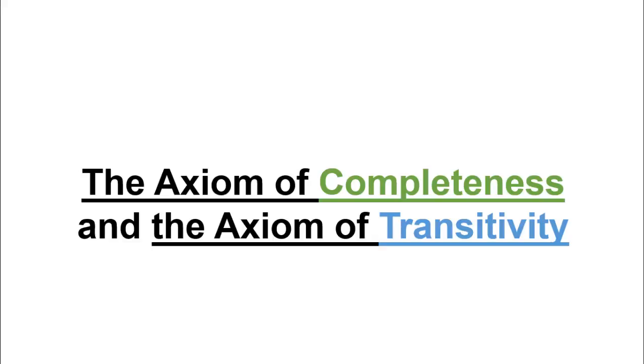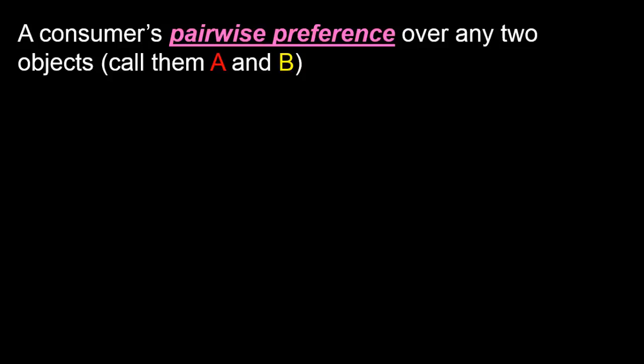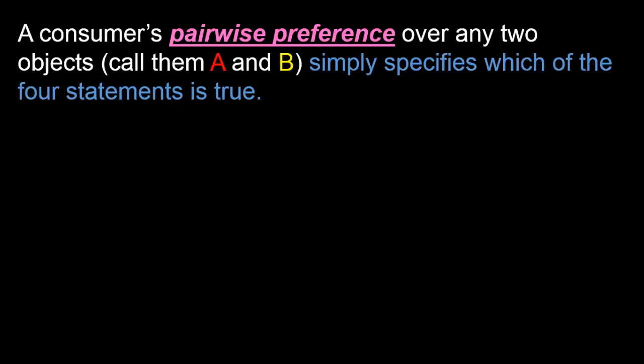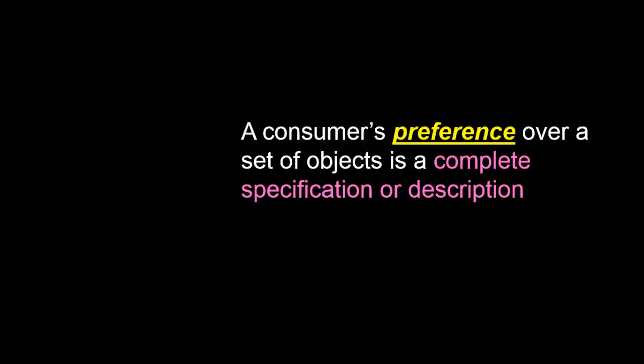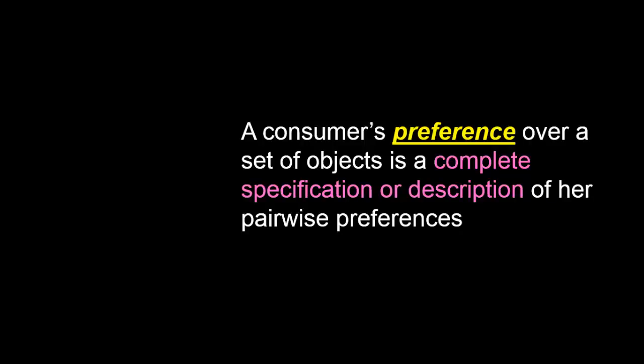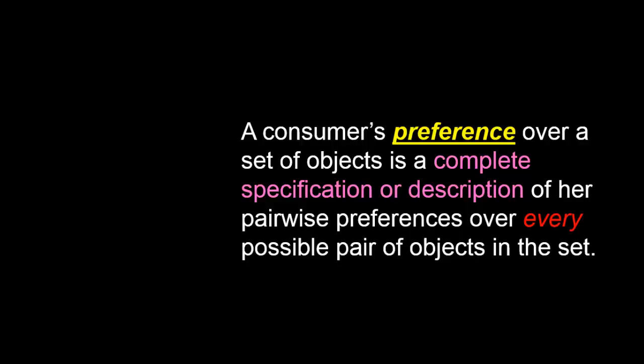The axiom of completeness and the axiom of transitivity. In the last video, we said that a consumer's pairwise preference over any pair of objects, called them A and B, is simply a specification of which of four statements is true. We then defined the consumer's preference over a set of objects to be a complete specification of pairwise preferences over every possible pair of objects in the set.